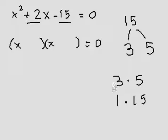Positive 5 and negative 3. Because that way, positive 5 plus negative 3 will give us positive 2. And then we multiply to negative 15.